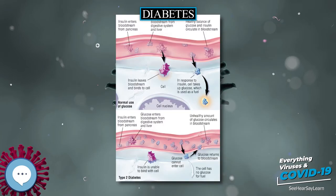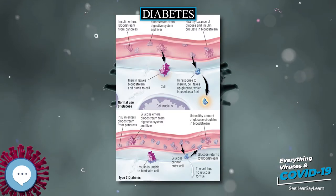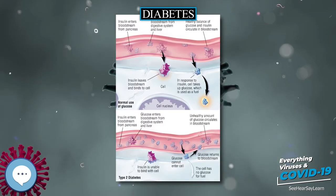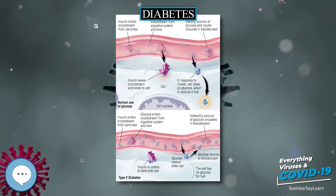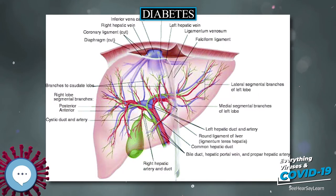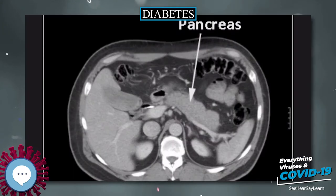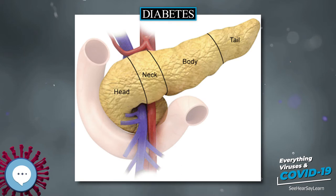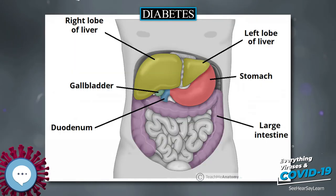Most cases are mild and are not considered medical emergencies. Effects can range from feelings of unease, sweating, trembling, and increased appetite in mild cases to more serious effects such as confusion, changes in behavior such as aggressiveness, seizures, unconsciousness, and, rarely, permanent brain damage or death in severe cases.